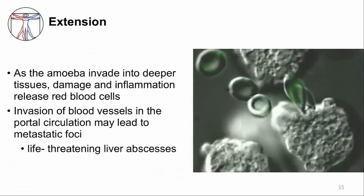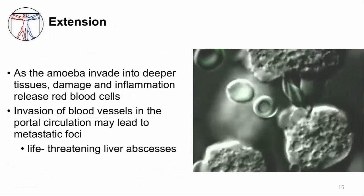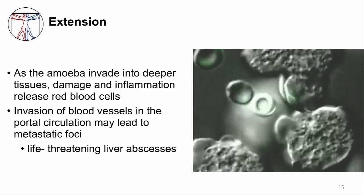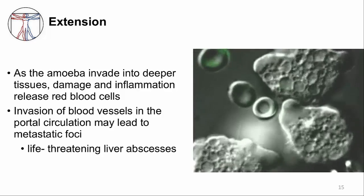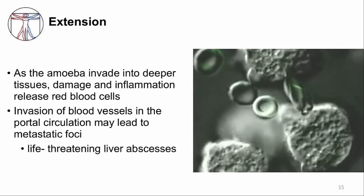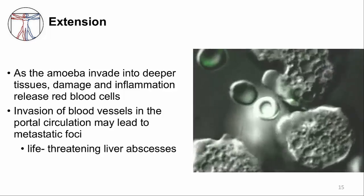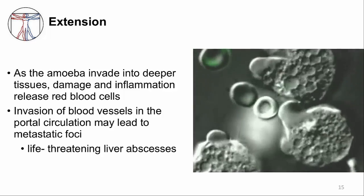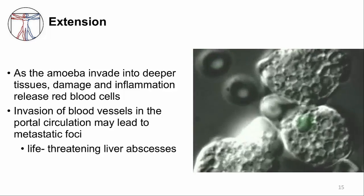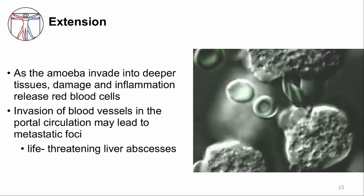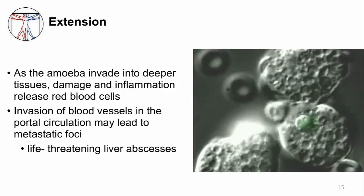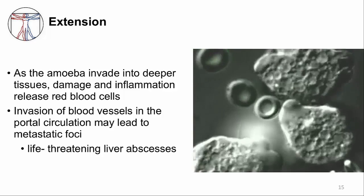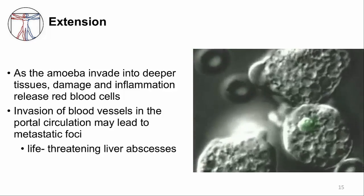As amoeba invade into deeper tissues, they cause damage to blood vessels, causing blood in the stools. Entamoeba histolytica can engulf red blood cells and red blood cell fragments. The movie shows Entamoeba histolytica ingesting red blood cells labeled green. Invasion deeper into blood vessels can then lead to transport through the portal circulation, where they can survive and produce liver abscesses.